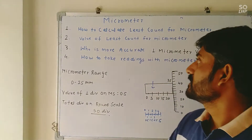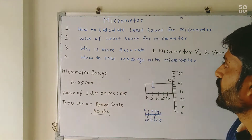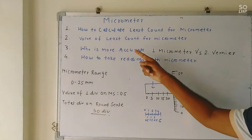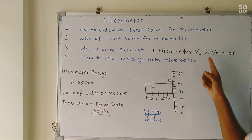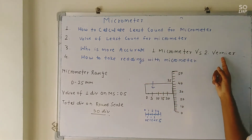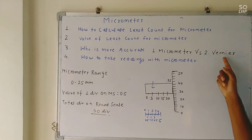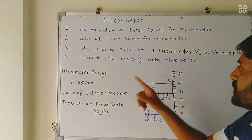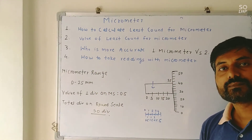Welcome back students. This topic is micrometer. We will cover four points: first, how to calculate least count for micrometer; second, the value of least count for micrometer; third, who is more accurate — micrometer versus vernier caliper. In the previous video we covered vernier caliper — what it is, how to calculate its least count, and how to take a reading with it. Fourth point is how to take a reading with the micrometer.